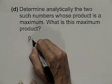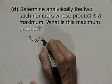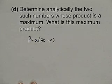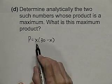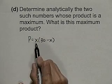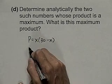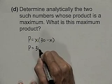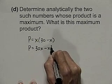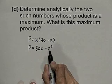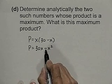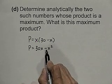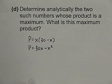Let's continue. What we want to do now is determine analytically the two such numbers whose product is a maximum. Well, here's our maximum product equation. We want to find the numbers whose product is a maximum. First, let's distribute x to get 30x minus x squared. Notice that this is a quadratic equation. It's a quadratic equation that opens downward. Its maximum product is going to occur at the vertex.